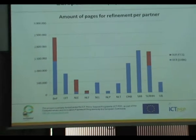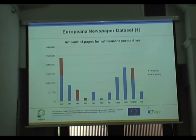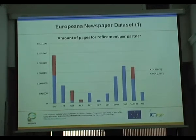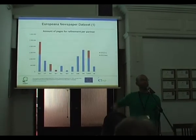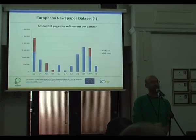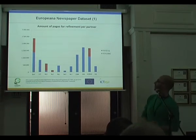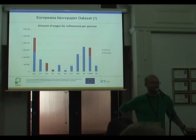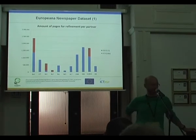This slide gives an overview of the amount of pages we get per partner and how they are distributed across two workflows. Basically, 8 million pages are done fully automatically with OCR, and 2 million — indicated in red — also have layout analysis and segmentation applied. You can see a lot of content from the French National Library and the Austrian National Library, which have already completed large-scale digitization programs, but also many smaller libraries with smaller amounts of content.